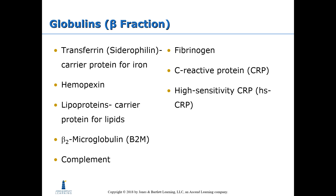The beta fraction includes transferrin, which is a carrier protein for iron. Lipoproteins are carrier proteins for lipids. C-reactive protein is typically elevated in inflammatory reactions. Complement can be elevated during certain types of infections. These will be discussed in more detail as the course progresses.